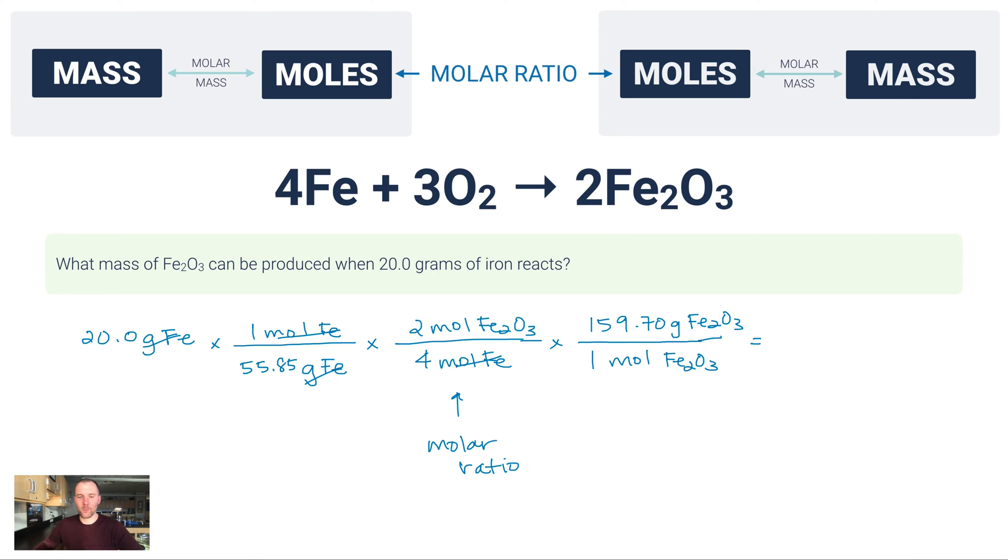Okay, so now I'm ready. I've cancelled out everything I want to cancel out and look, I'm in mass, grams of iron(III) oxide, and that's exactly what the question is asking me for: what mass of Fe2O3 can be produced? So when I type this into my calculator, I'm typing in 20, I'm skipping over all the ones because they don't affect the math at all. 20 times 2 times 159.7 divided by 55.85 divided by 4, and I get 28.6, 28.6 grams.